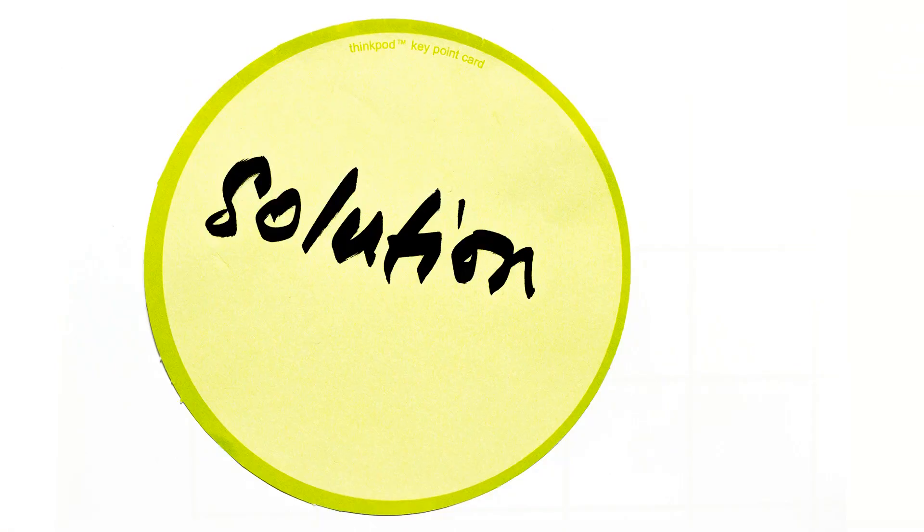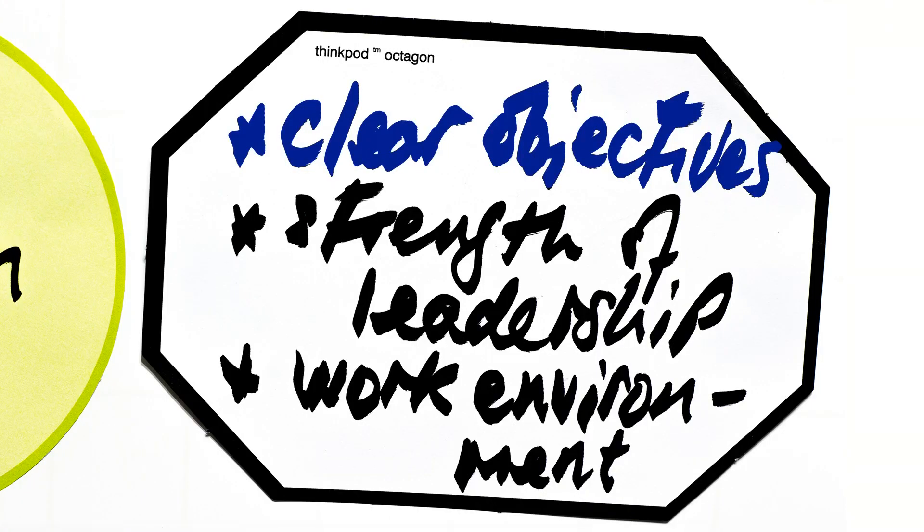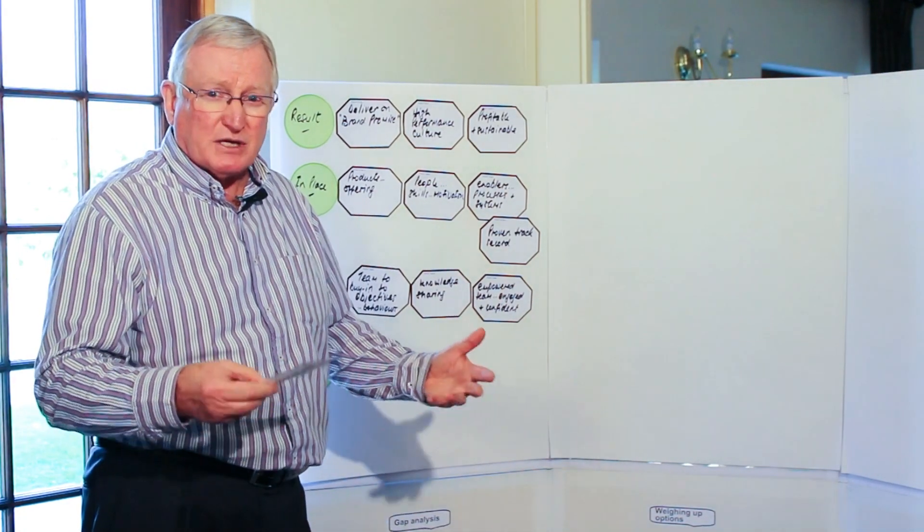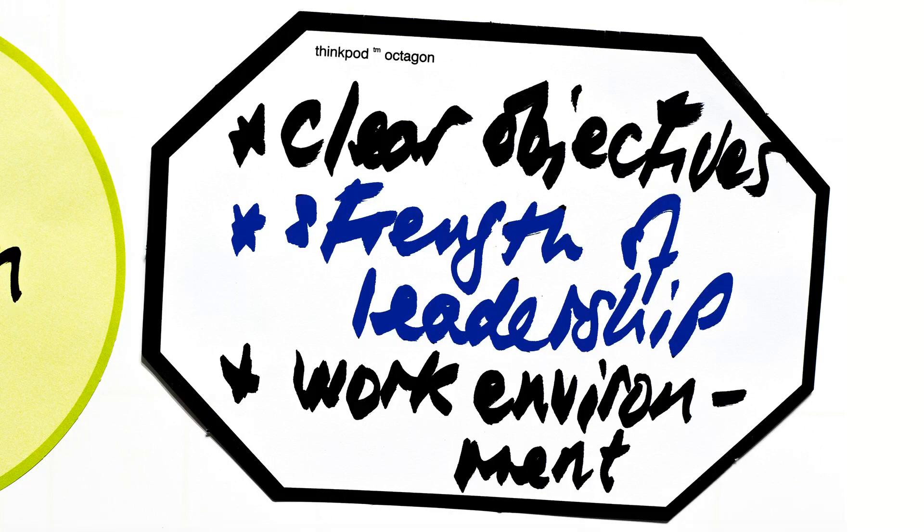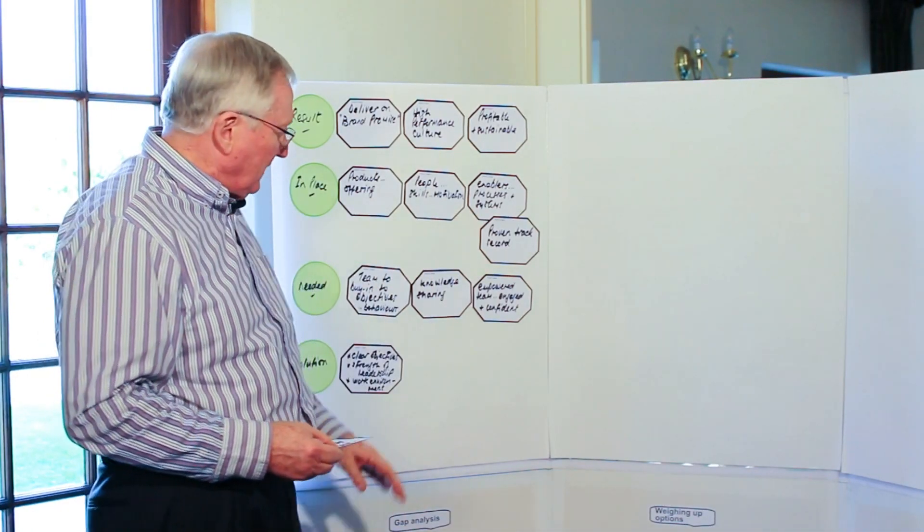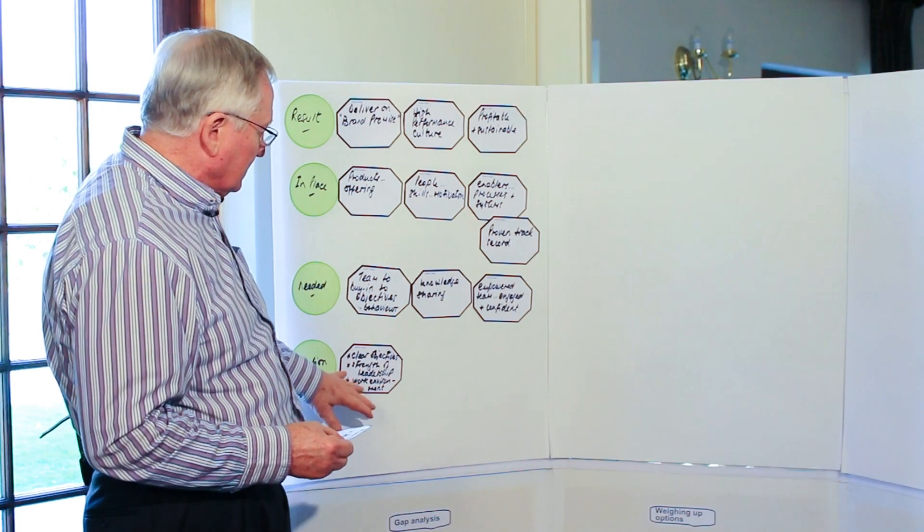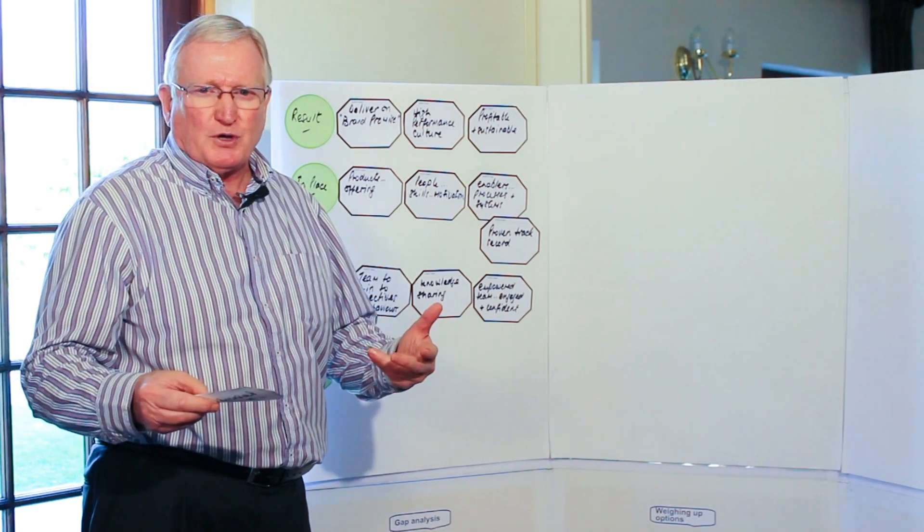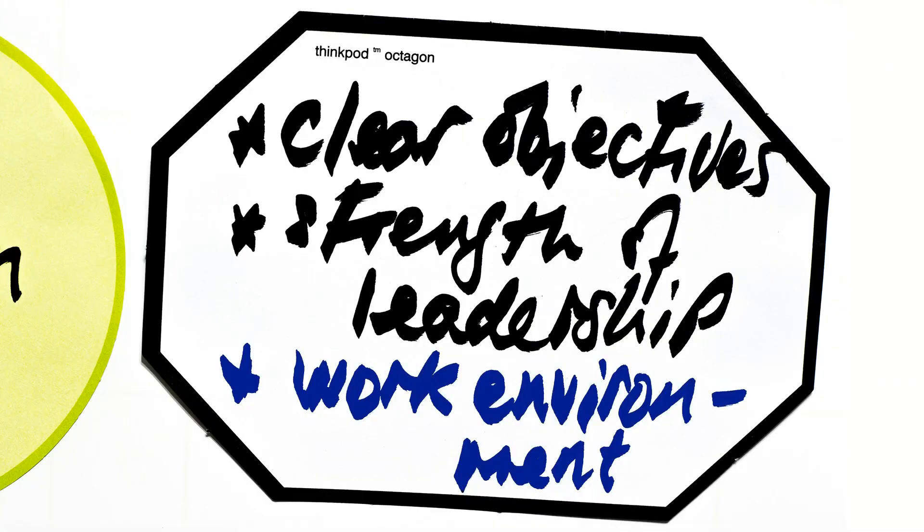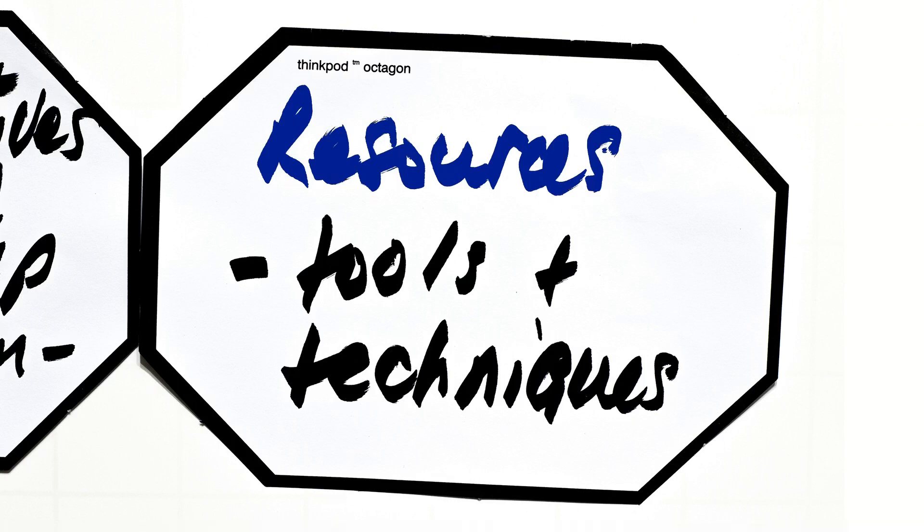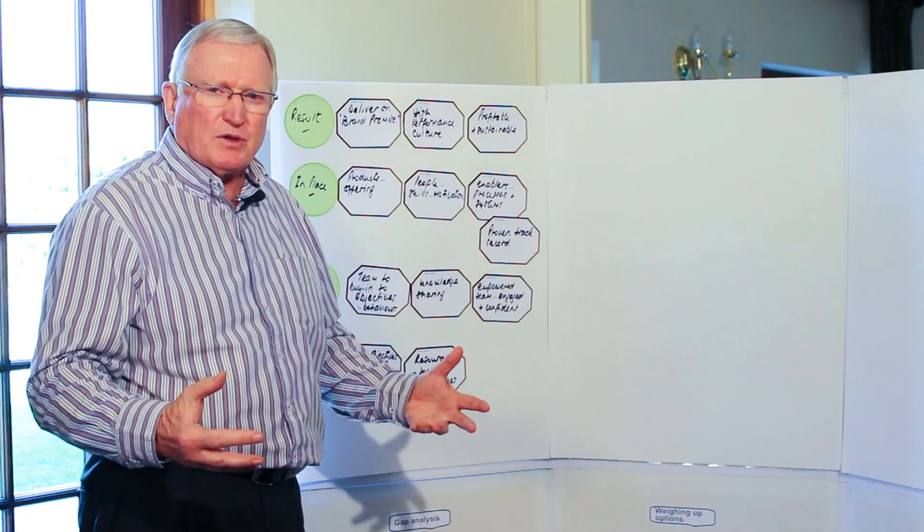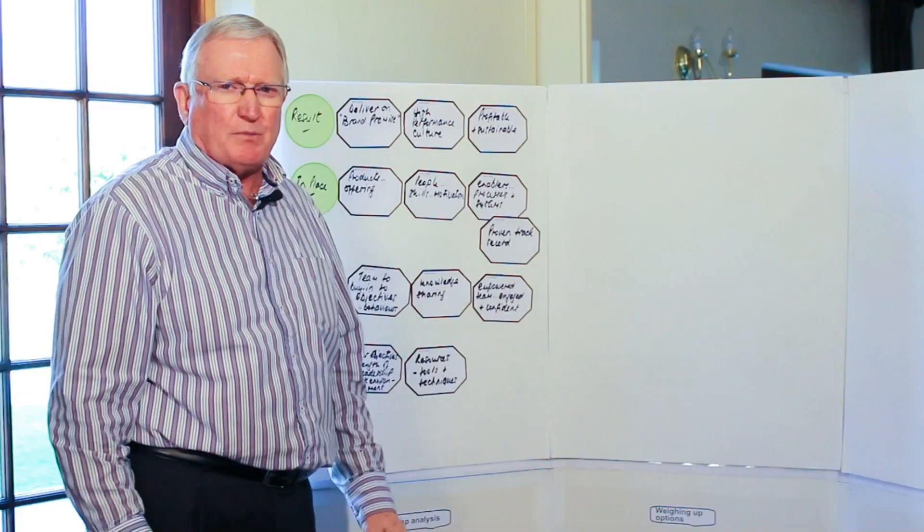So how do we do that? Well, we're saying the ideal way to do that is to be absolutely clear about our objectives. Be sure that we know what our objectives are and that everybody understands what we're trying to achieve. And then make sure that our leadership underpin that and demonstrate those behaviors as well that help us achieve those objectives. And then we do know we have to give people a nice work environment, a place where they feel comfortable and happy to come to work. And then, very importantly, re-look our resources and say what tools and techniques do we empower our people with so they can deliver on our brand promise.